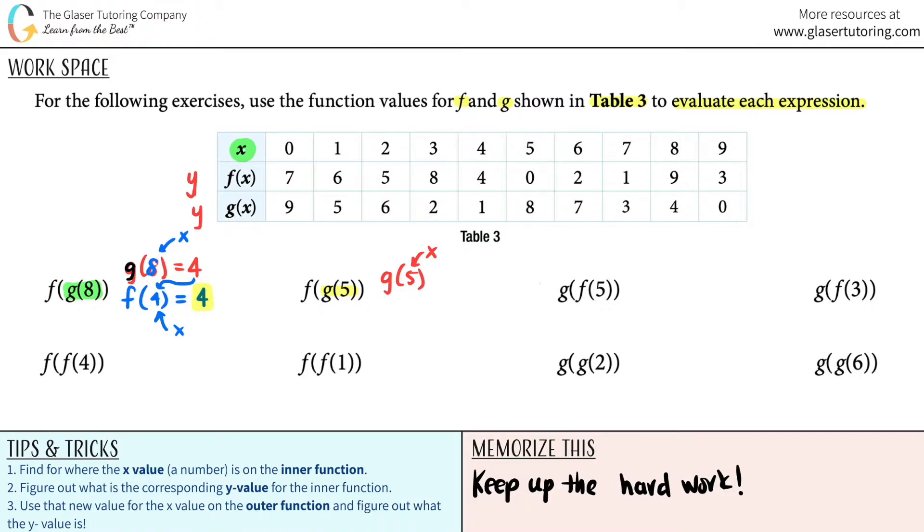So that's the first part. g of 5 equals 8. And now the outer function was f. You use that number, and that is now your new x value. So now x is 8. We got to go to the f value, the f function. And that is, start from here, oh it's 9. 9. Okay, that's the answer to the second one.